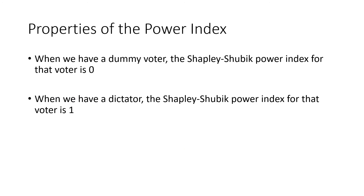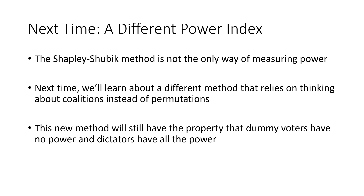Voter C had zero power, which indicates they are a dummy voter. On the flip side, if we had a dictator — a voter who passes a motion all by themselves — the Shapley-Shubik power index for that voter would be one, since every permutation would have that voter being pivotal. The Shapley-Shubik method is not the only way of measuring voter power. Next time we'll learn about a different method that relies on coalitions — a group of voters working together — rather than permutations. That method will still have the property that dummy voters have zero power and dictators have all the power.